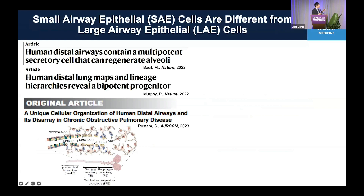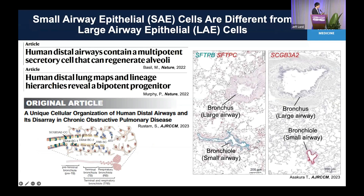Mucociliary clearance is regulated by epithelial cells, and recently epithelial cell populations have been reported to be different between large and small airways. In small airways, a secretory cell population uniquely present there has a bipotent progenitor function that can differentiate into airway and also alveolar cells depending on the situation. Famous markers for small airways identified in these papers are surfactant protein B (SFTPB) and SCGB3A2 — these markers are only expressed in the small airways, not in large airways.